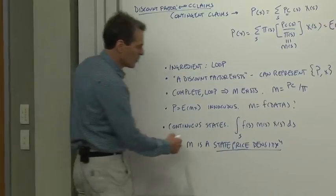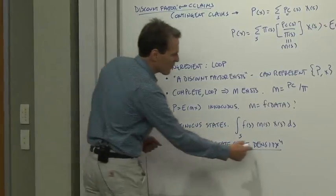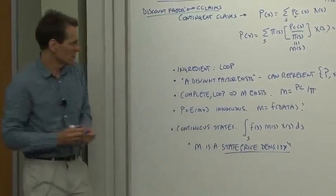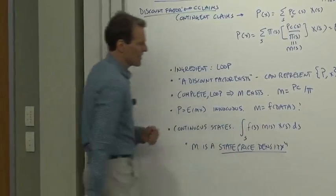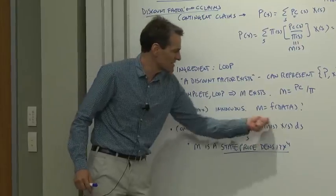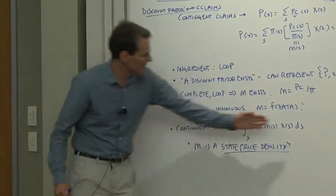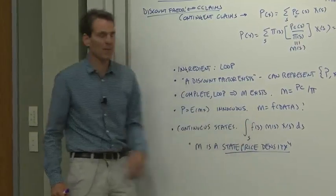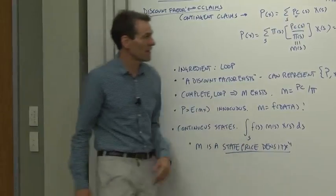And that's why we use the words state price density sometimes to refer to what I've called the discount factor. That's what it's doing here. It's just telling us the state prices in a way that we can integrate and then multiply by probabilities in order to find the value of something.